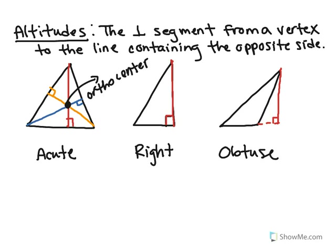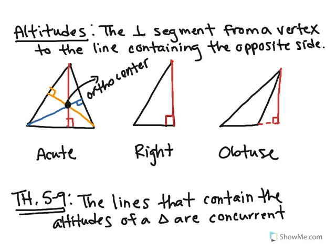The last thing I want to show you is one last theorem: theorem 5-9 in your book states that the lines that contain the altitudes of a triangle are concurrent. In other words, if I were to make altitudes on all sides of my triangle, they're concurrent and they make a point of concurrency called the orthocenter. So that's it — that concludes this tutorial.